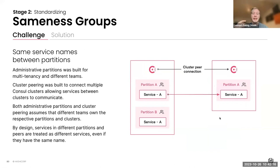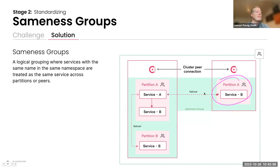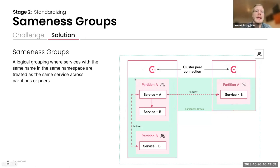The next feature is sameness groups — same service names between partitions. The problem is having the same service name but wanting to introduce a sameness group: a logical grouping of services within the same namespaces so they can be treated as the same service, distributed across two clusters — cluster one and cluster two. This allows use of the same namespaces in a federated or cluster-peered approach so that those services are available across the organization.